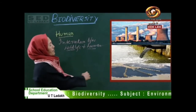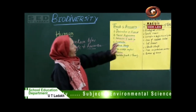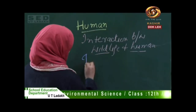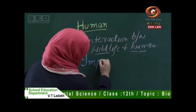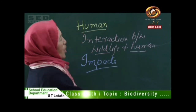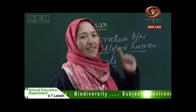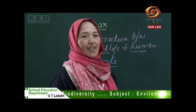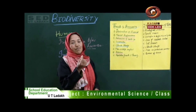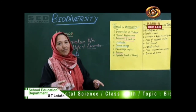The second point is the impact of the loss of biodiversity. What happens when there is a threat to biodiversity? First one is ecological imbalance — if any single organism is missing from the chain, the ecological system is disturbed.